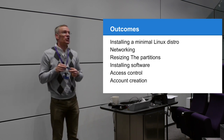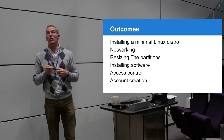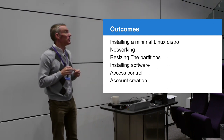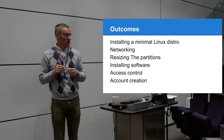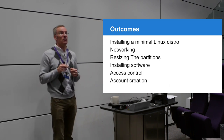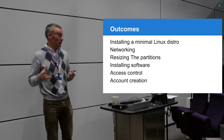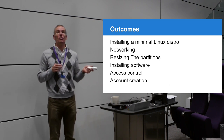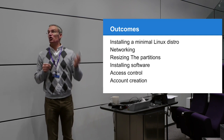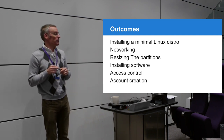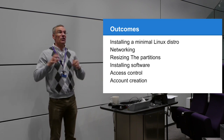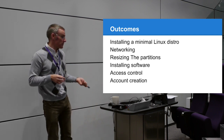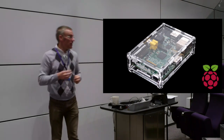The last two topics will carry over to next week's presentation because it overruns. We'll cover installing Linux distributions, networking, resizing partitions - because you need that to install everything properly. How to install software is today's final topic. Next week we cover access control: Linux permissions, chmod, chown, chgrp, read/write/execute, and account creation.